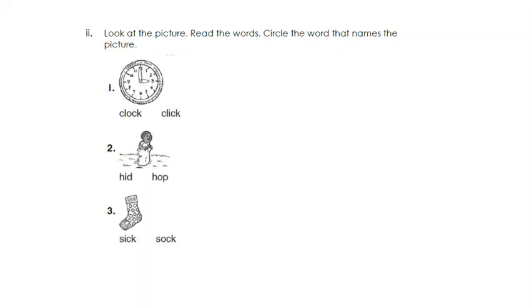Look at the pictures, read the words, and then circle the word that names the picture. What is this picture? Is it a clock or a click? It is clock with short O, and not short I. What is the boy doing? Head or hop? He is hopping, and not hiding. What is this picture? Is it sick or sock? It is sock.